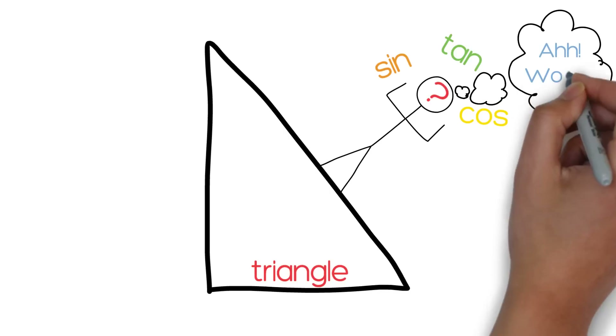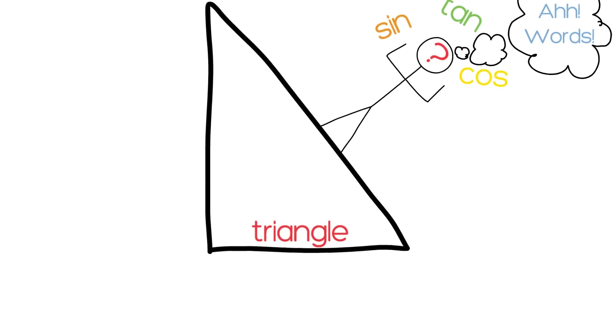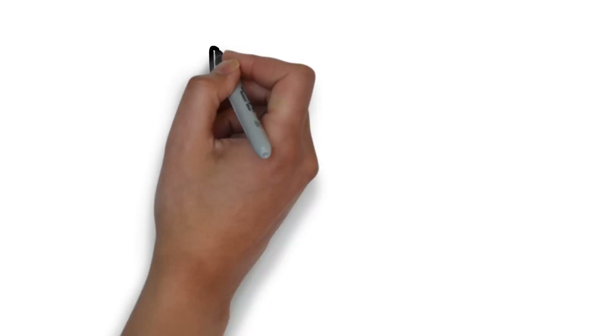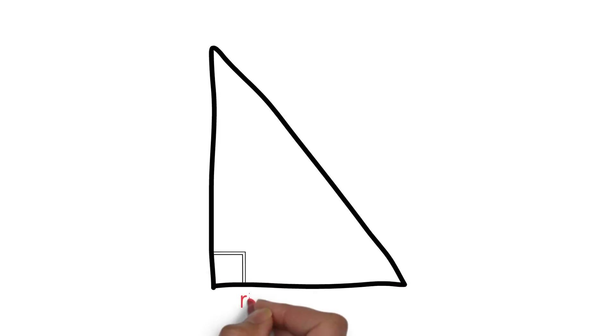Don't get caught up in the words for now. Let's actually look at what these words mean. Trigonometry, or trig for short, works with exactly this type of triangle — a right triangle.